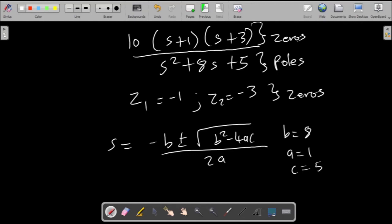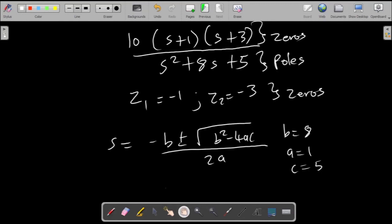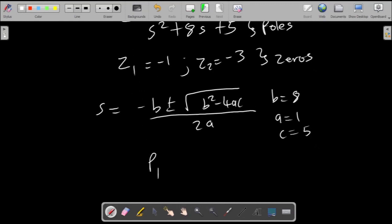Now putting this expression into your calculator to find the two roots or to find the two poles in our case, we then find that one of the poles is given as, so p_1 from this expression, one of the poles will be negative 0.683, and another one would be negative 7.317.